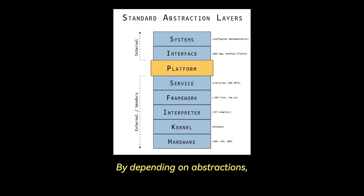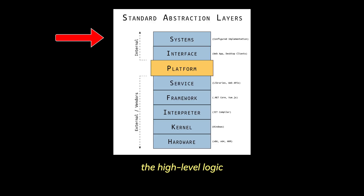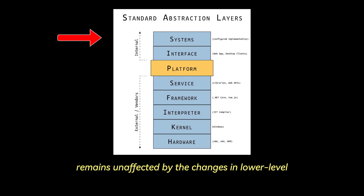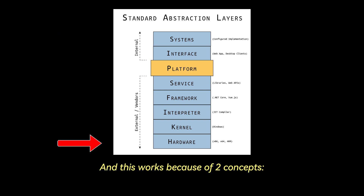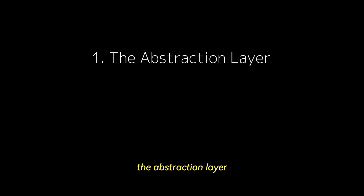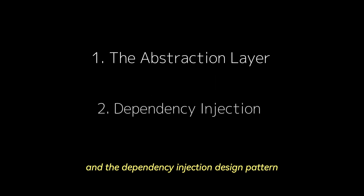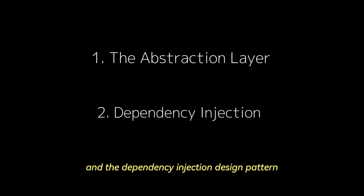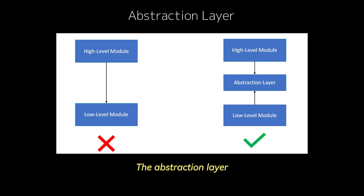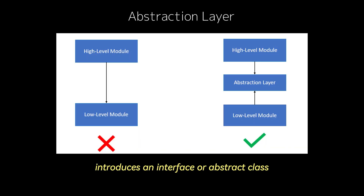By depending on abstractions, the high-level logic remains unaffected by changes in lower-level details. And this works because of two concepts: the abstraction layer and the dependency injection design pattern. The abstraction layer introduces an interface, or abstract class, that defines the contract between high-level and low-level modules.